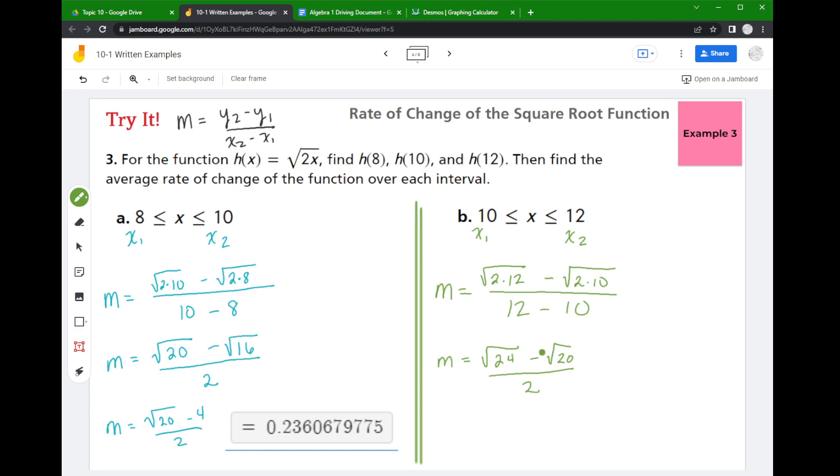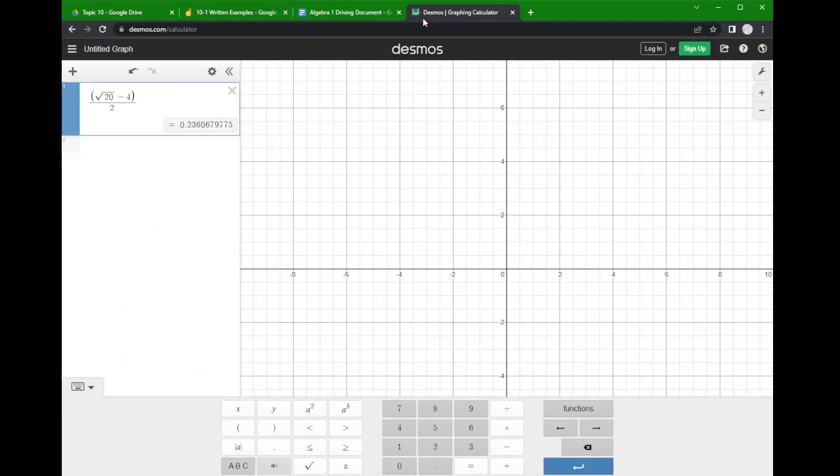So 2 times 12 is 24, and 2 times 10 is 20, and down below 12 minus 10 is 2. And so I'm not going to freak out about too much more cleaning there. That's fine, but that's because I want to get a decimal approximation.